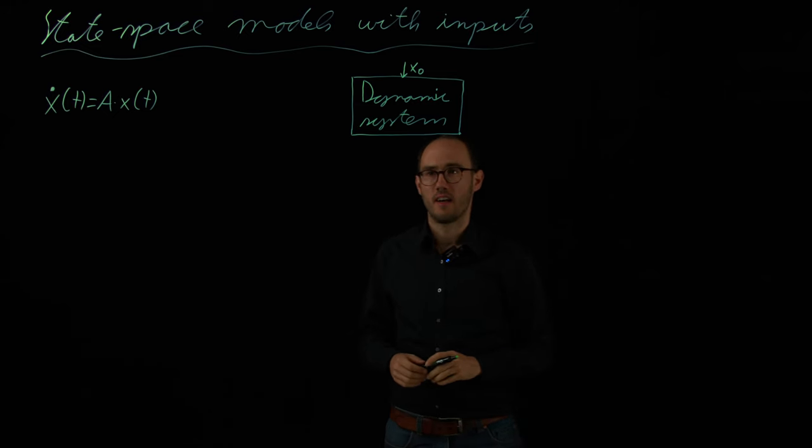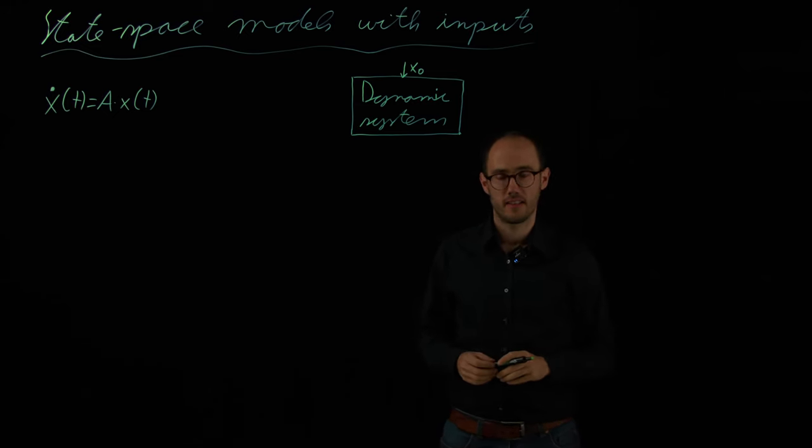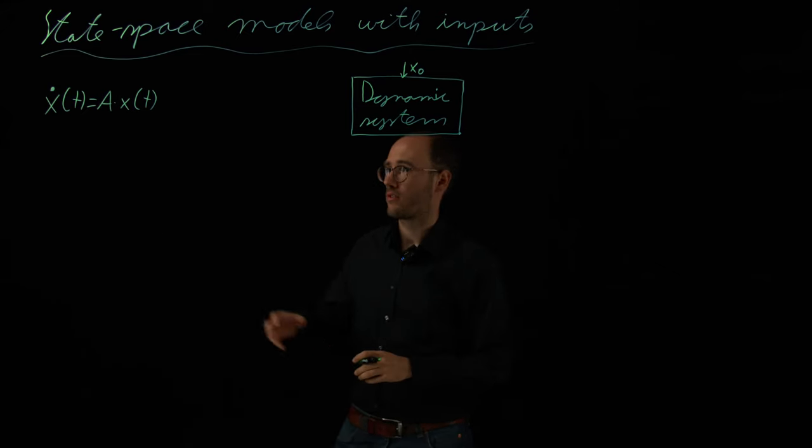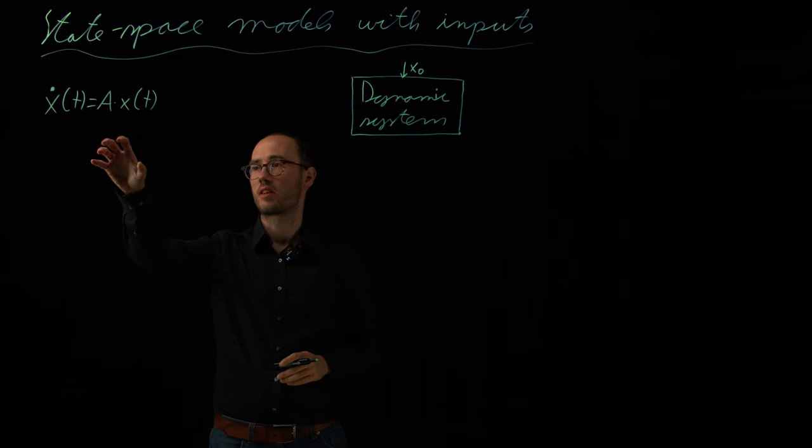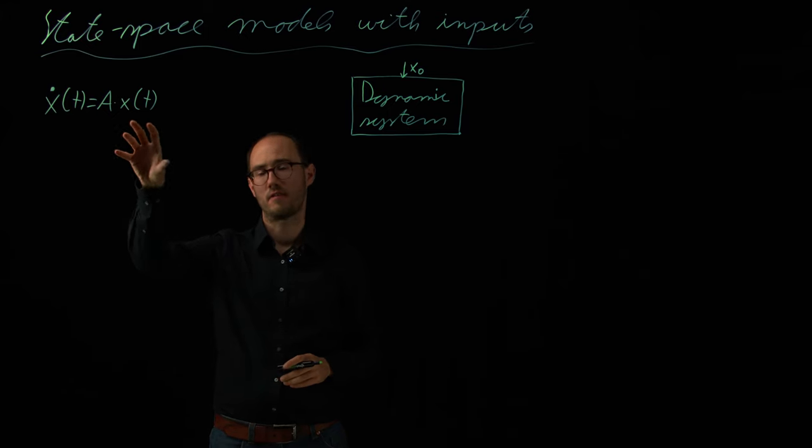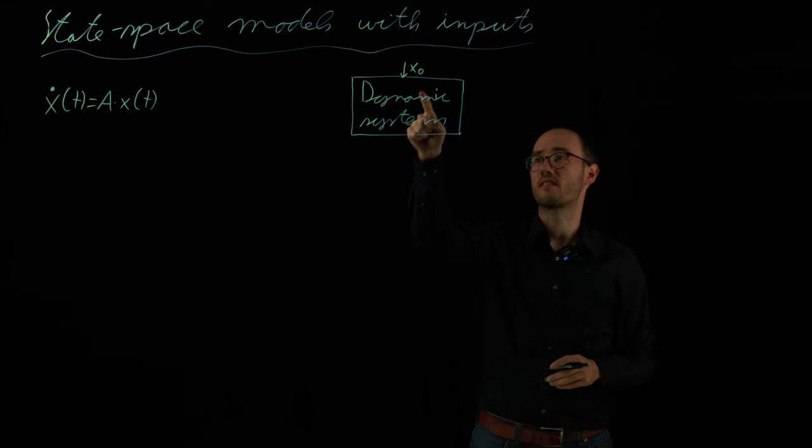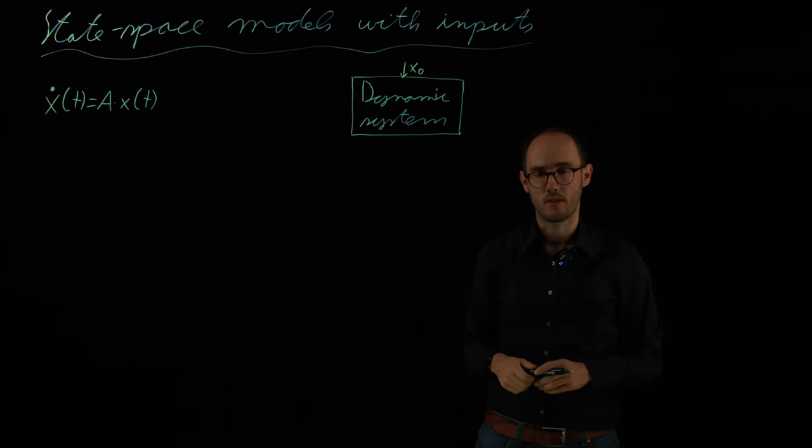So, hello everyone. What we have considered until now so far are so-called autonomous ODEs. So, for example, here in the linear case we considered a system which is just defined by states and we had considered the system response giving x zero, so the initial state of the system as the only input to the system.